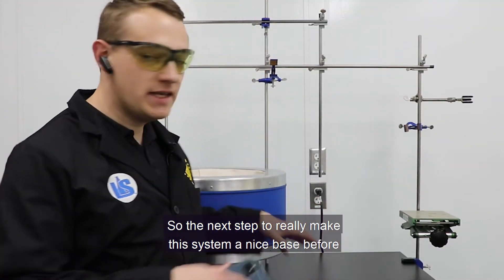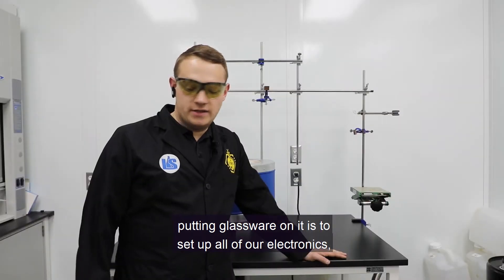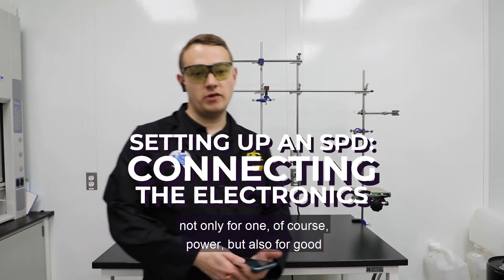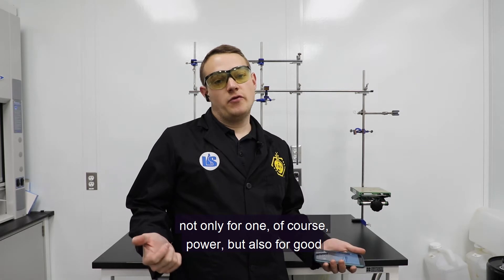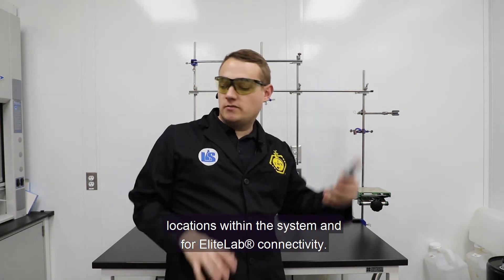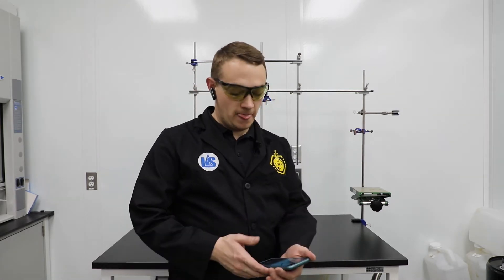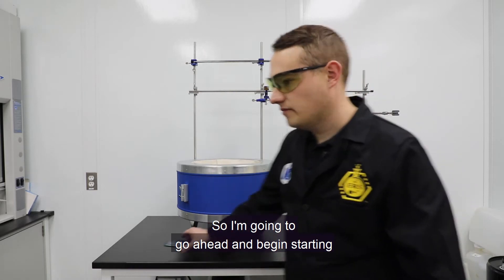So the next step to really make this system a nice base before putting glassware on it is to set up all of our electronics, not only for power, but also for good locations within the system and for Elite Lab connectivity. So I'm going to go ahead and begin, starting with the controllers.